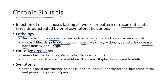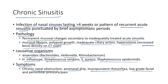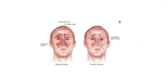Causative organisms of chronic sinusitis include anaerobes like Bacteroides, Veillonella, and rhinobacterium, as well as Haemophilus influenzae, Streptococcus viridans, Staphylococcus aureus, and Staphylococcus epidermidis. Symptoms include chronic nasal obstruction, post-nasal drip, mucopurulent rhinorrhea, and low-grade facial and periorbital pressure and pain.